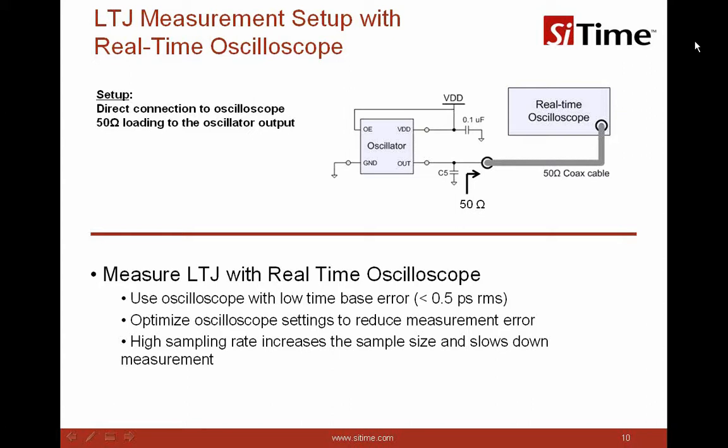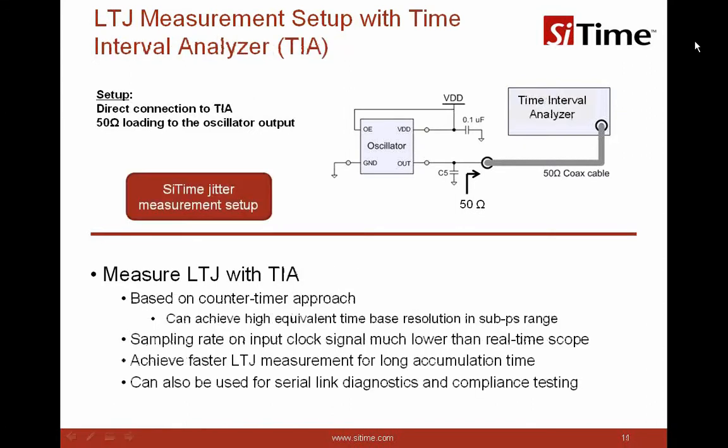The best tool for long-term jitter measurement is usually not the real-time oscilloscope. We introduce a type of test equipment called the Time Interval Analyzer (TIA). The TIA is based on a counter-timing approach and can achieve high equivalent time-base resolution in the sub-picosecond range, while its sampling rate on the input clock signal is much lower than real-time scopes. This allows the TIA to achieve faster long-term jitter measurement, especially for long accumulation times.